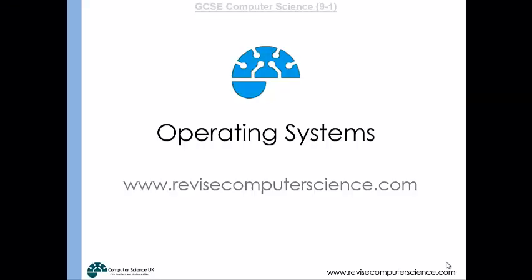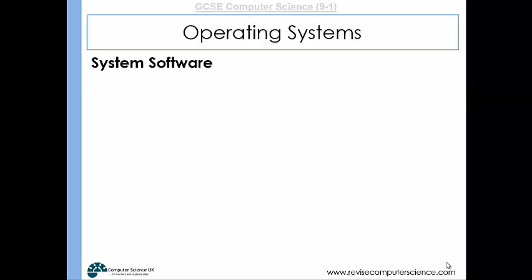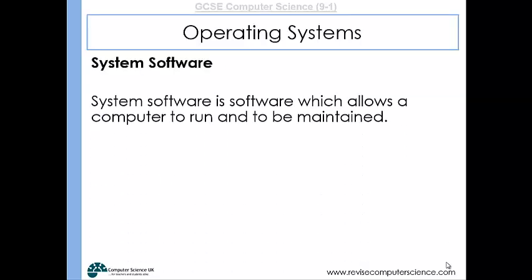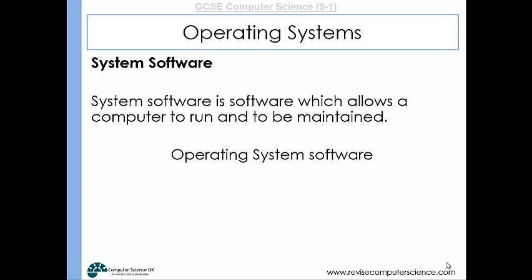This video will look at system software, in particular operating systems. System software is software which will allow the computer to run and be maintained. There are two types of software which come under the system software bracket: operating systems and utility software.